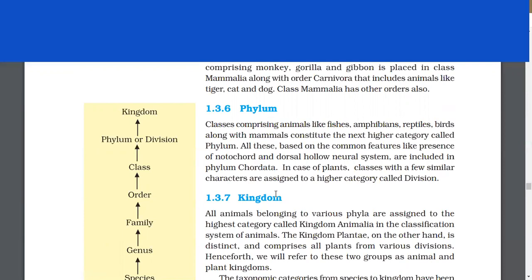Classes comprising animals like fishes, amphibians, reptiles, birds, along with mammals constitute the next higher category called phylum. All these, based on common features like presence of notochord and dorsal hollow neural system, are included in phylum Chordata. In case of plants, classes with a few similar characters are assigned to a higher category called division.